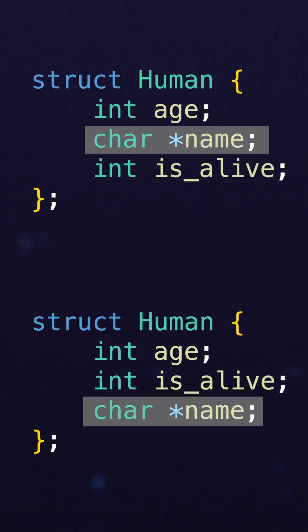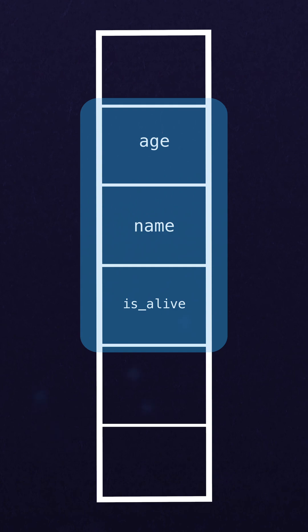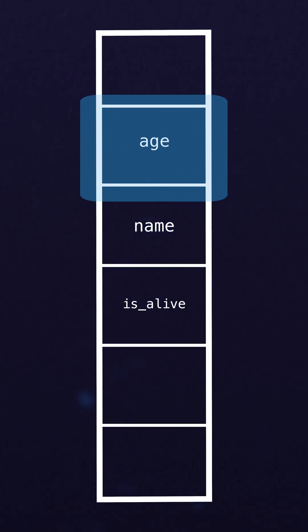One thing that is different than what you might expect from Python or JavaScript is that the order you define the fields actually matters in terms of the size and the layout of memory. When we make a struct, what we're really doing is telling C we have several different pieces of data and we'd like them placed next to each other in memory and operated on as a block. That block can be bigger or smaller depending on how we lay out the data.